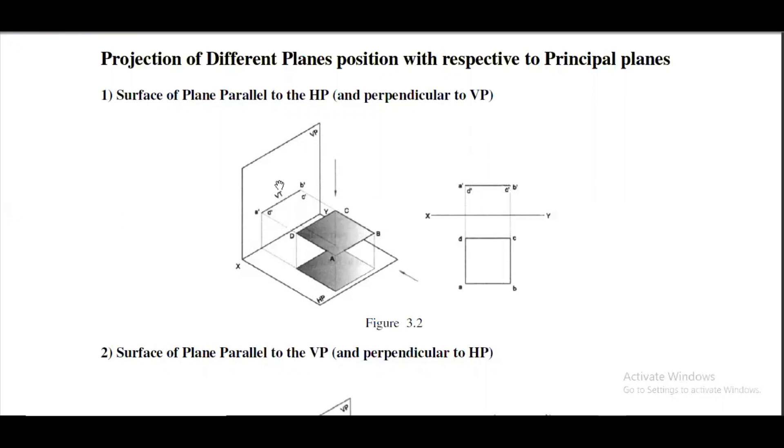Remember as we are aware that the points in the front view are represented with the dash, so that the same A dash B dash C dash D dash. And the points in the HP are represented without any dashes, that is A, B, C, D. This is the main convention.